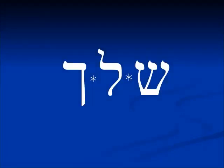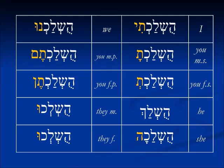This is the verb shalach, which we looked at in the hif'il. It means to cast out or to throw far away. In the passive sense of the ho'fal, it is the thing which is cast out, the thing which is thrown away. So — ho'fal perfect tense verbs.